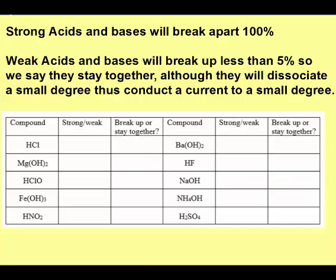Strong acids and bases break apart 100%. Weak acids and bases will break apart less than 5%, so we say they stay together, although they conduct a current to a small degree. For net ionic equations, weak acids and weak bases will stay together. On this list, you first decide if it's strong or weak, then if it breaks apart or stays together. HCl starts with hydrogen, so it's an acid — it was one of the seven strong ones — so it's a strong acid and will break apart.